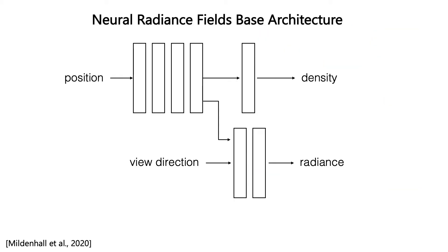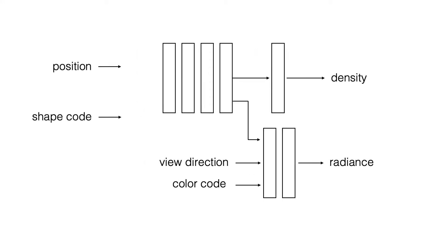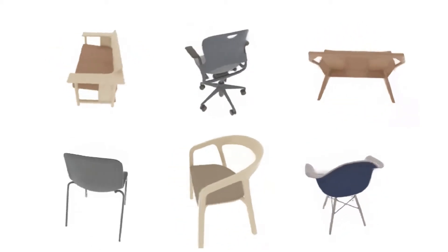Our architecture builds on neural radiance fields in two ways. First, we introduce shape and color codes for each instance, allowing a single radiance field to represent multiple object instances. The graph paper introduced a similar concept in their work. We go beyond this by introducing an instance-independent shape branch, which learns a generic representation of the object category. We can use our model to render novel views of a particular object by conditioning on an object instance. Such a model is called a conditional radiance field.